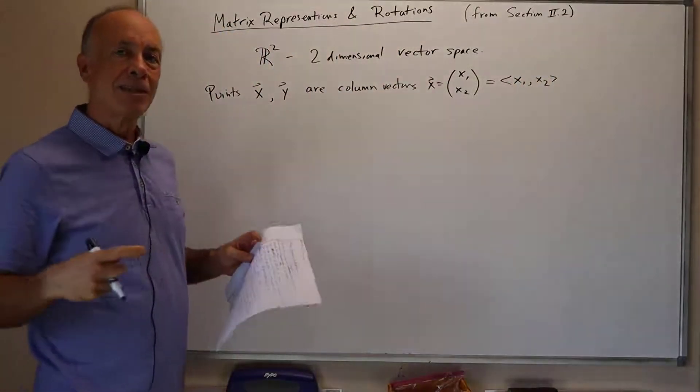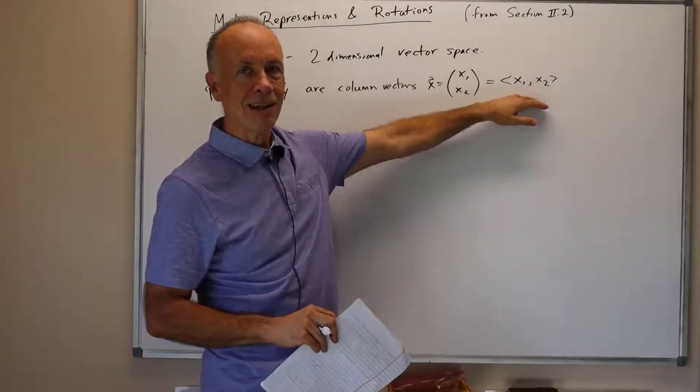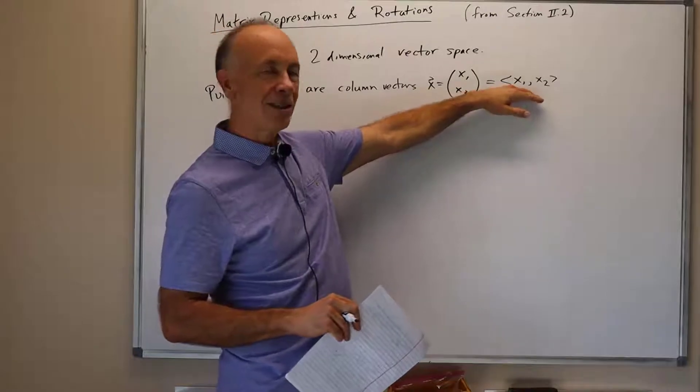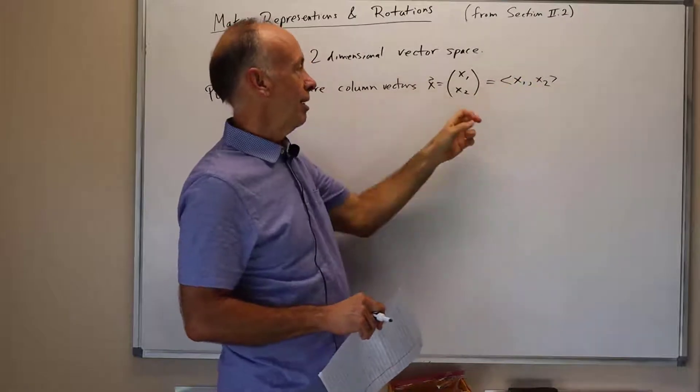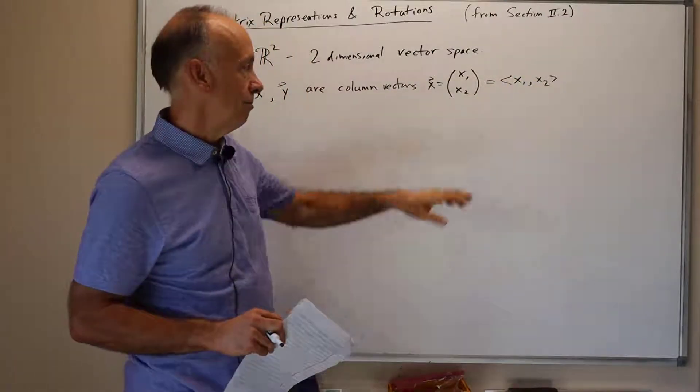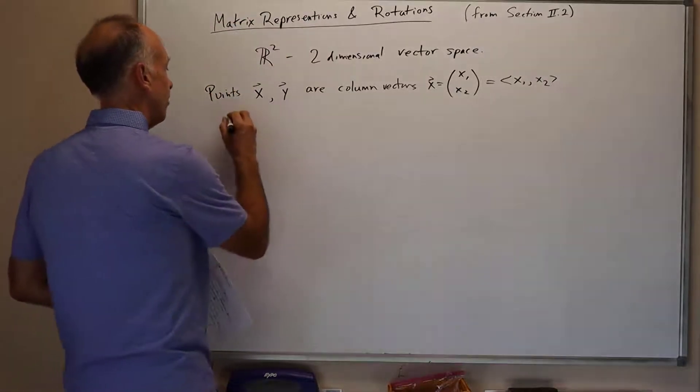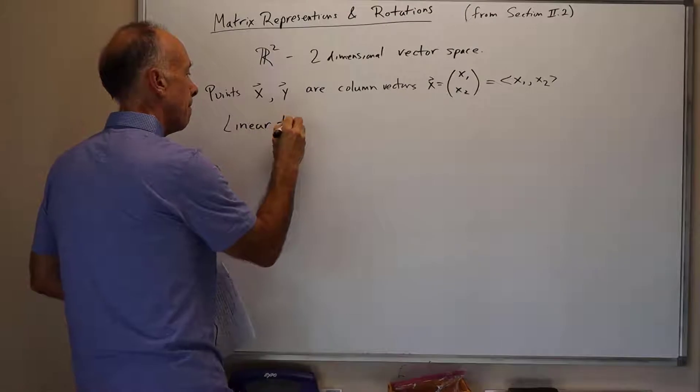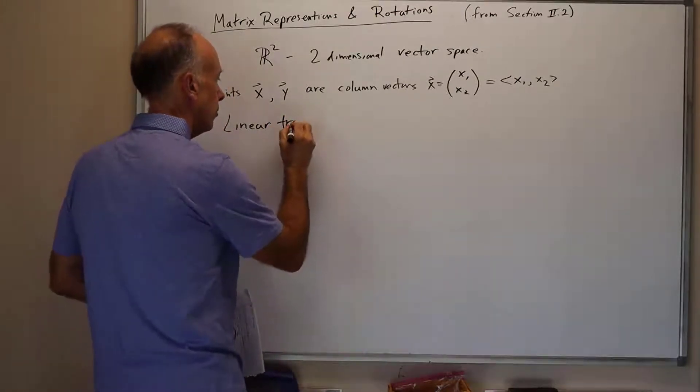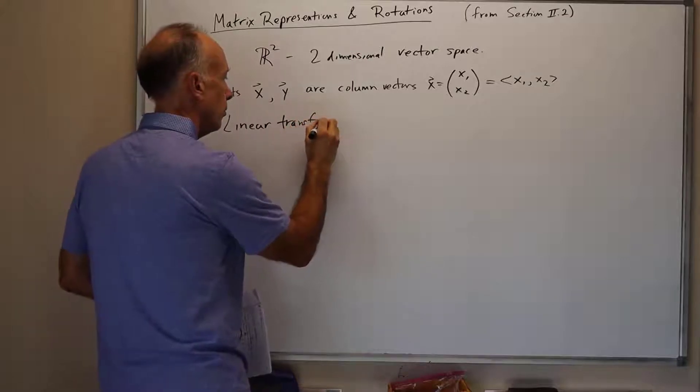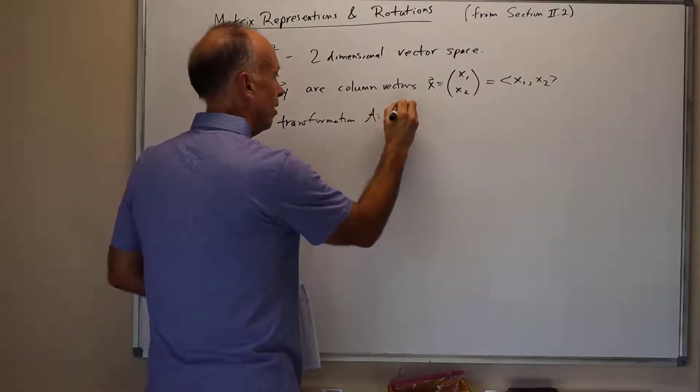Although it's written as a row, with the angle brackets there, what I'm signaling is that I really mean it to be a column vector. The whole point of this is merely to save space when typesetting. The angle brackets mean it's really a column vector. I think of that as a two-by-one matrix, if you wish. And we have a linear transformation A mapping R2 to R2.